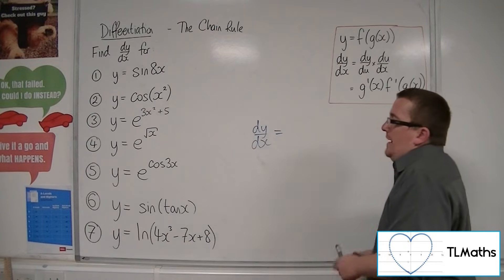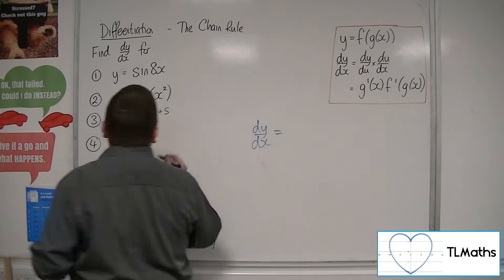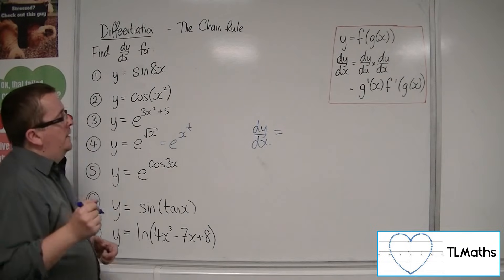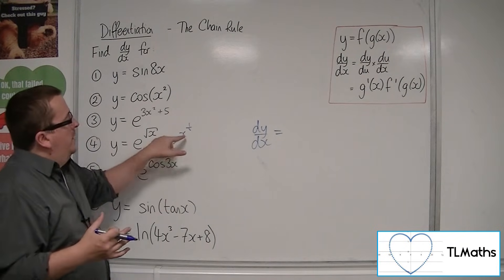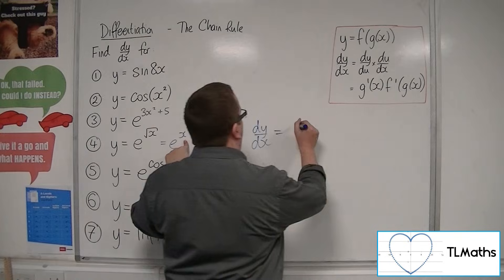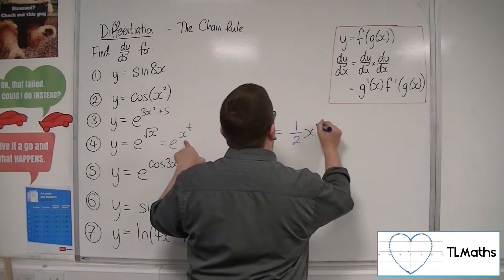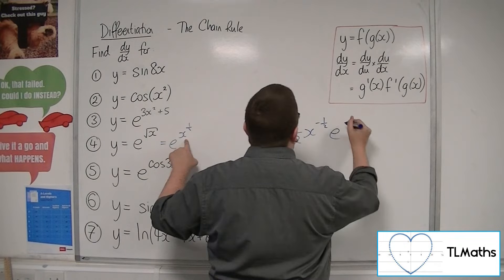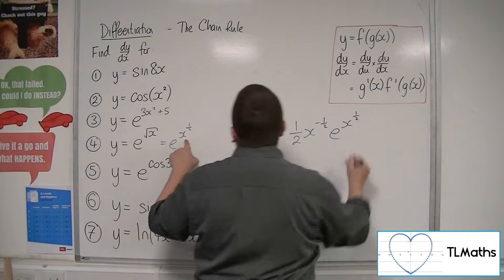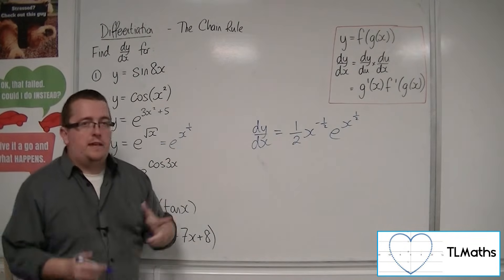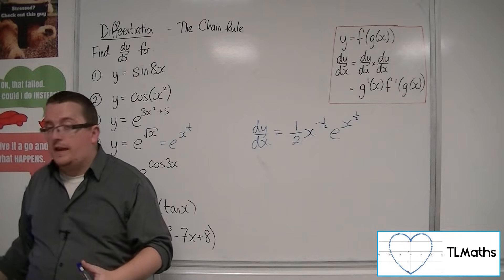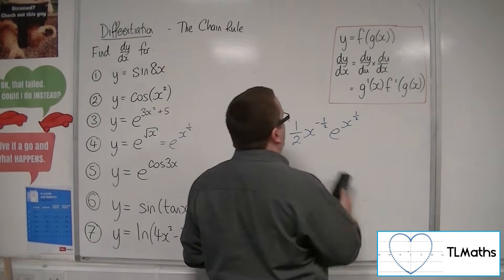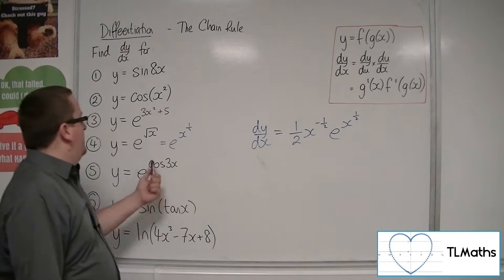y equals e to the square root of x, i.e., e to the x to the half. The derivative of what's inside comes outside: one-half x to the minus one-half. Then you have e to the x to the half, because the derivative of e to the u is just e to the u. So that is the derivative.